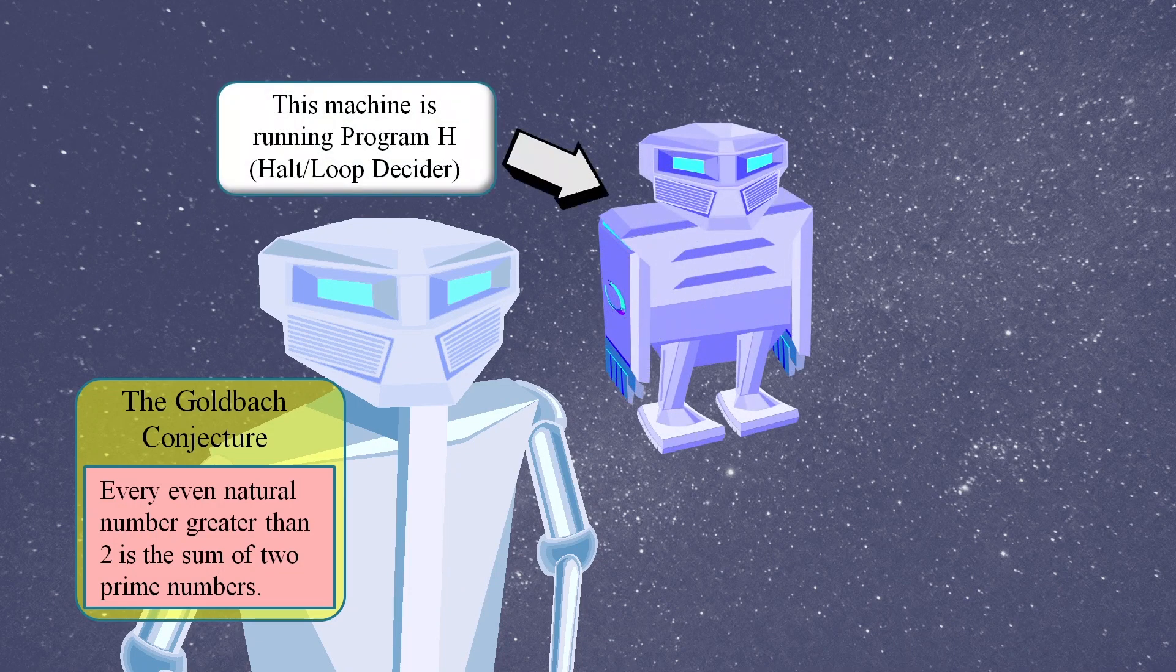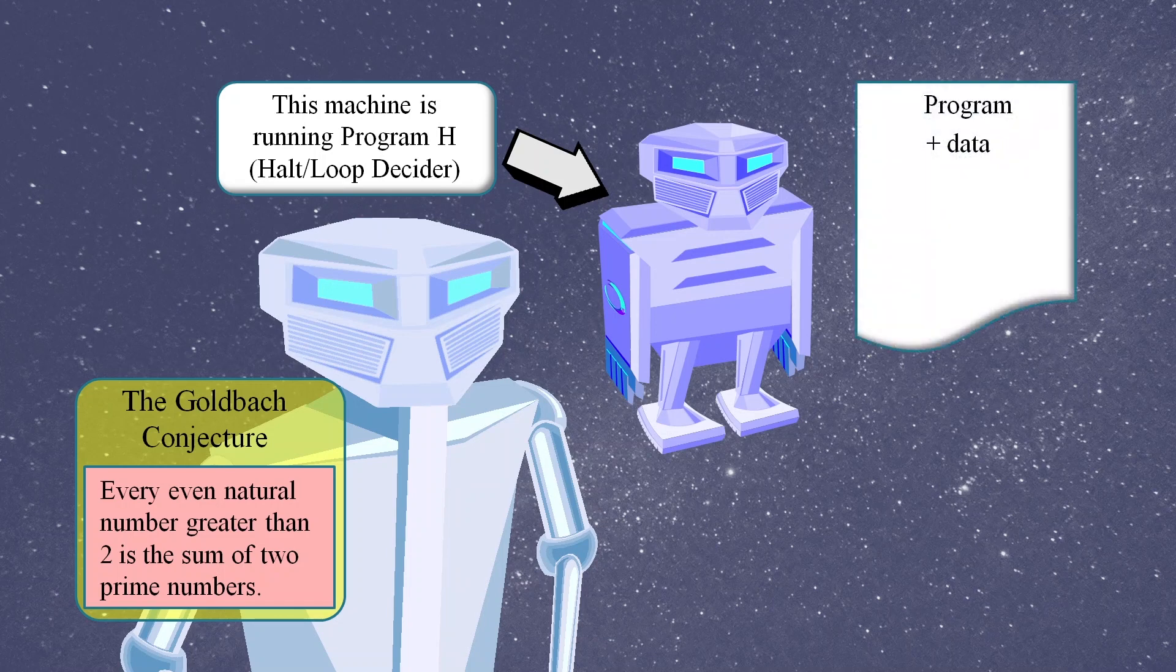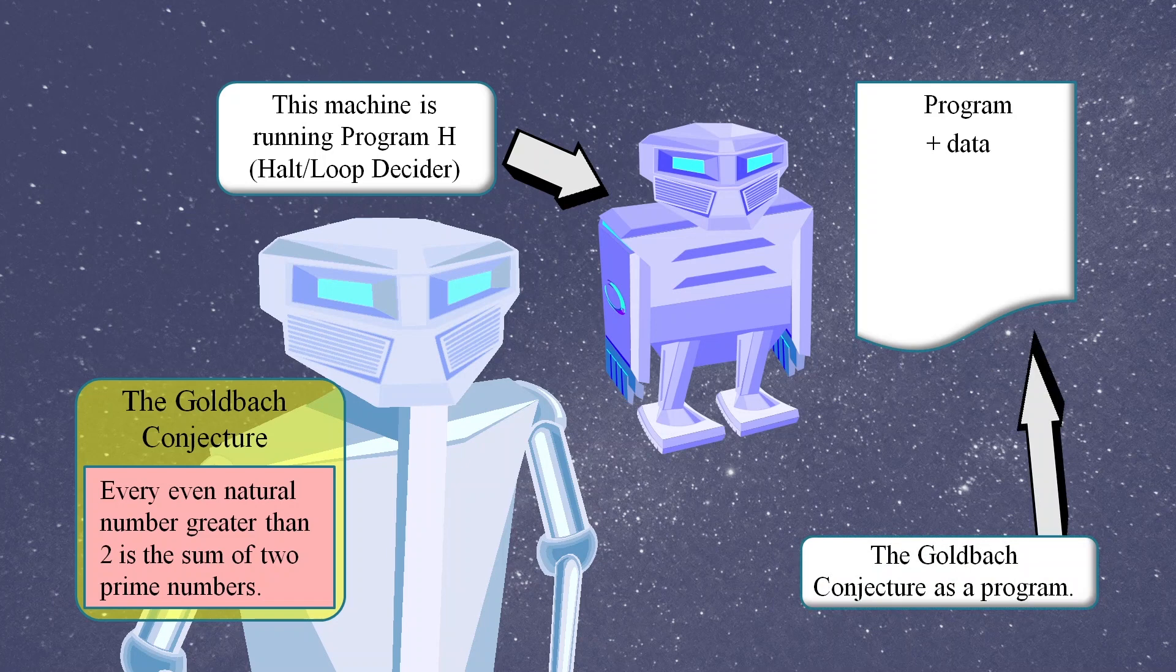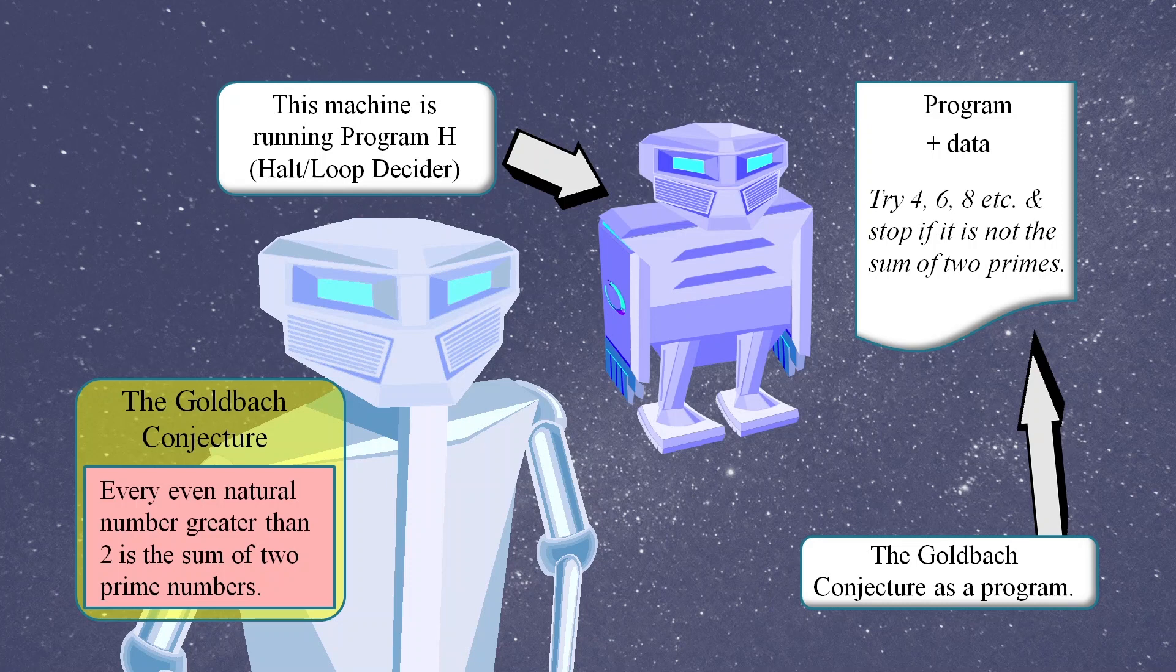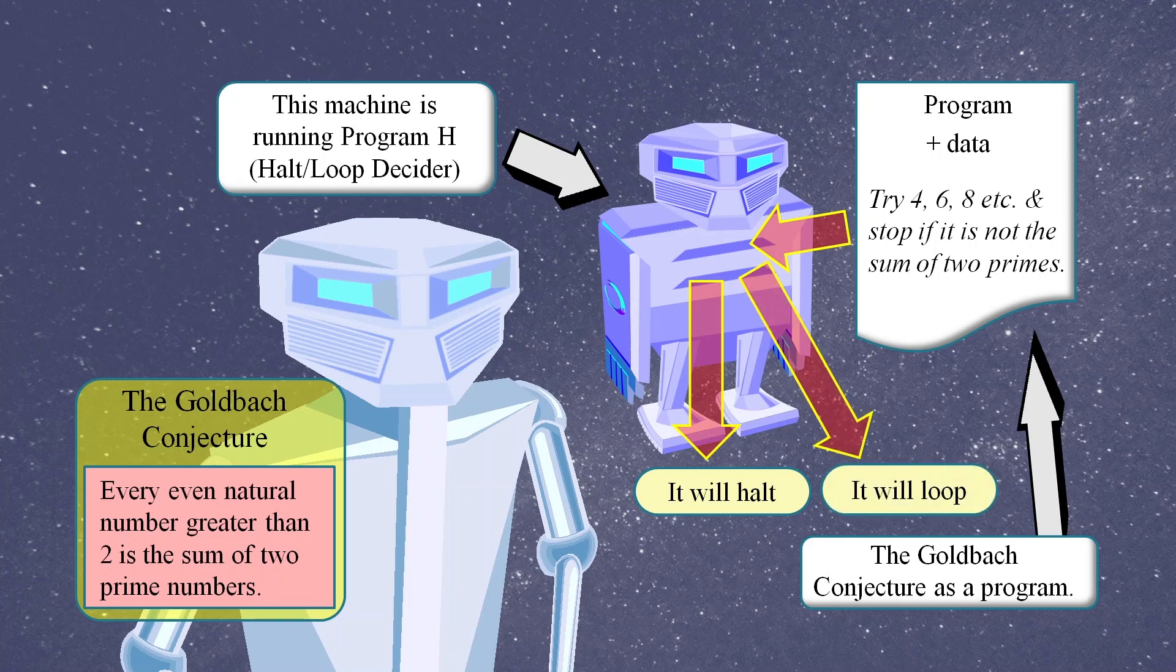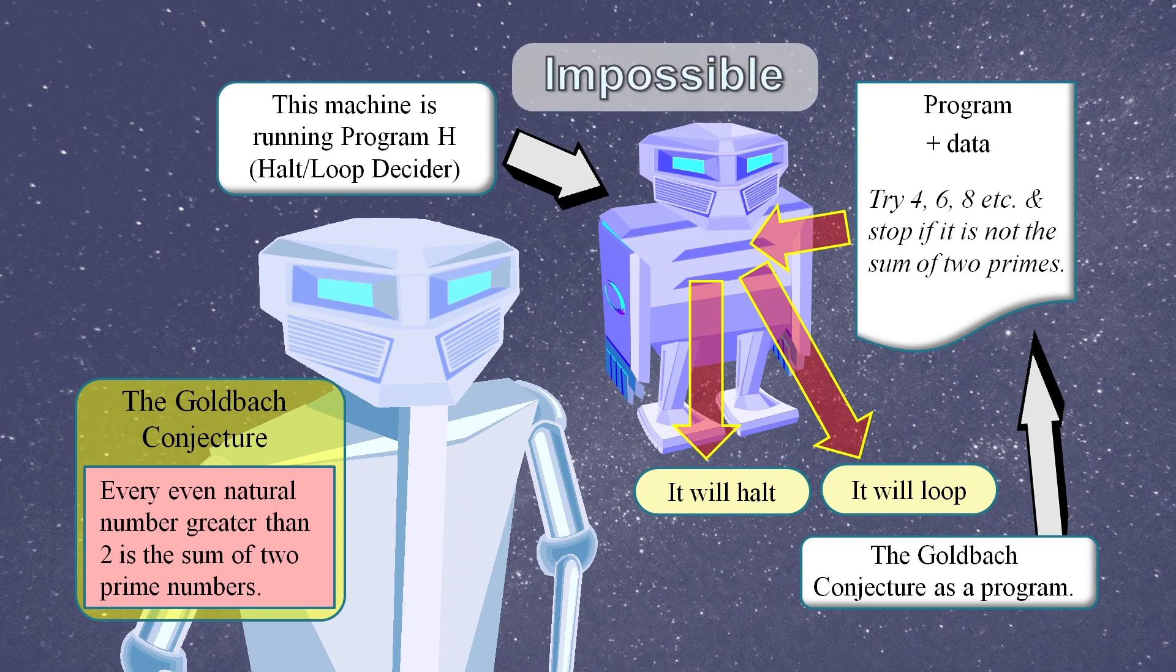Suppose we could have a machine that could figure out if a program with its input data is going to finish nicely or go into a loop. Then we could design a computer program based on the Goldbach conjecture. The program could test each even number greater than two to see if it was a sum of two primes, and would simply stop when it finds an even number that is not the sum of two primes. We pop this program into our halt loop decider, and it will determine if it will halt, in which case the Goldbach conjecture is false, or if it loops, in which case the Goldbach conjecture is true.